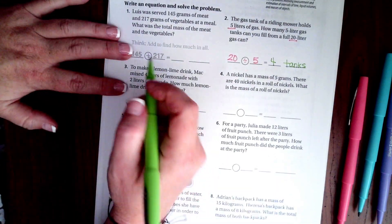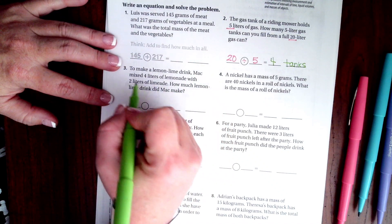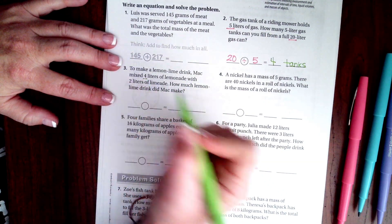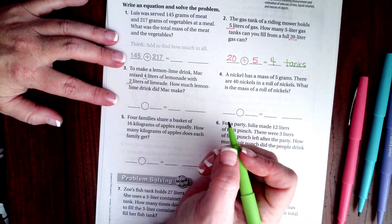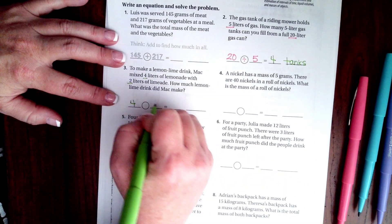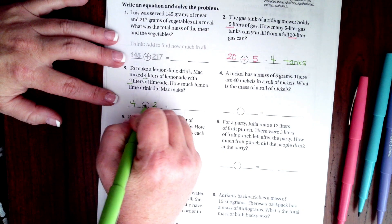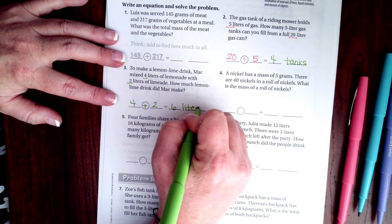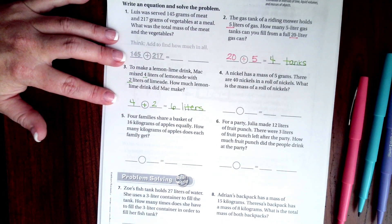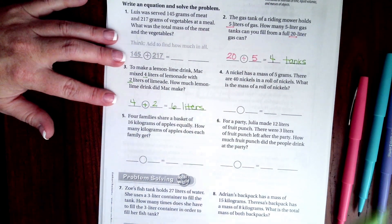We're going to go down to the next one. It says to make lemon-lime drink, Mac mixed 4 liters of lemonade with 2 liters of limeade. How much lemon-lime drink did Mac make? Well, he mixed 4 and 2. We just have to add those together for 6 liters.